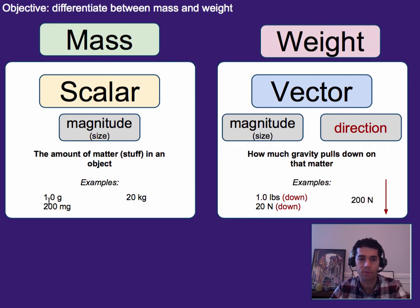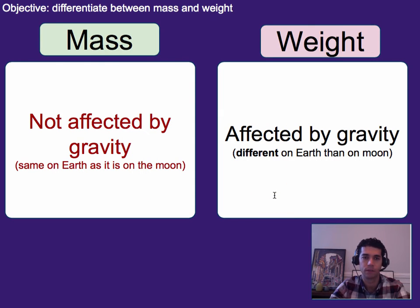A couple examples are measurements in grams or milligrams or kilograms. Versus weight, we usually measure in newtons in physics class. But in everyday life, we often measure it in pounds. One last thing to remember, mass not affected by gravity. So, your mass is the same here as it is on Earth. Versus weight would change depending on where you are.